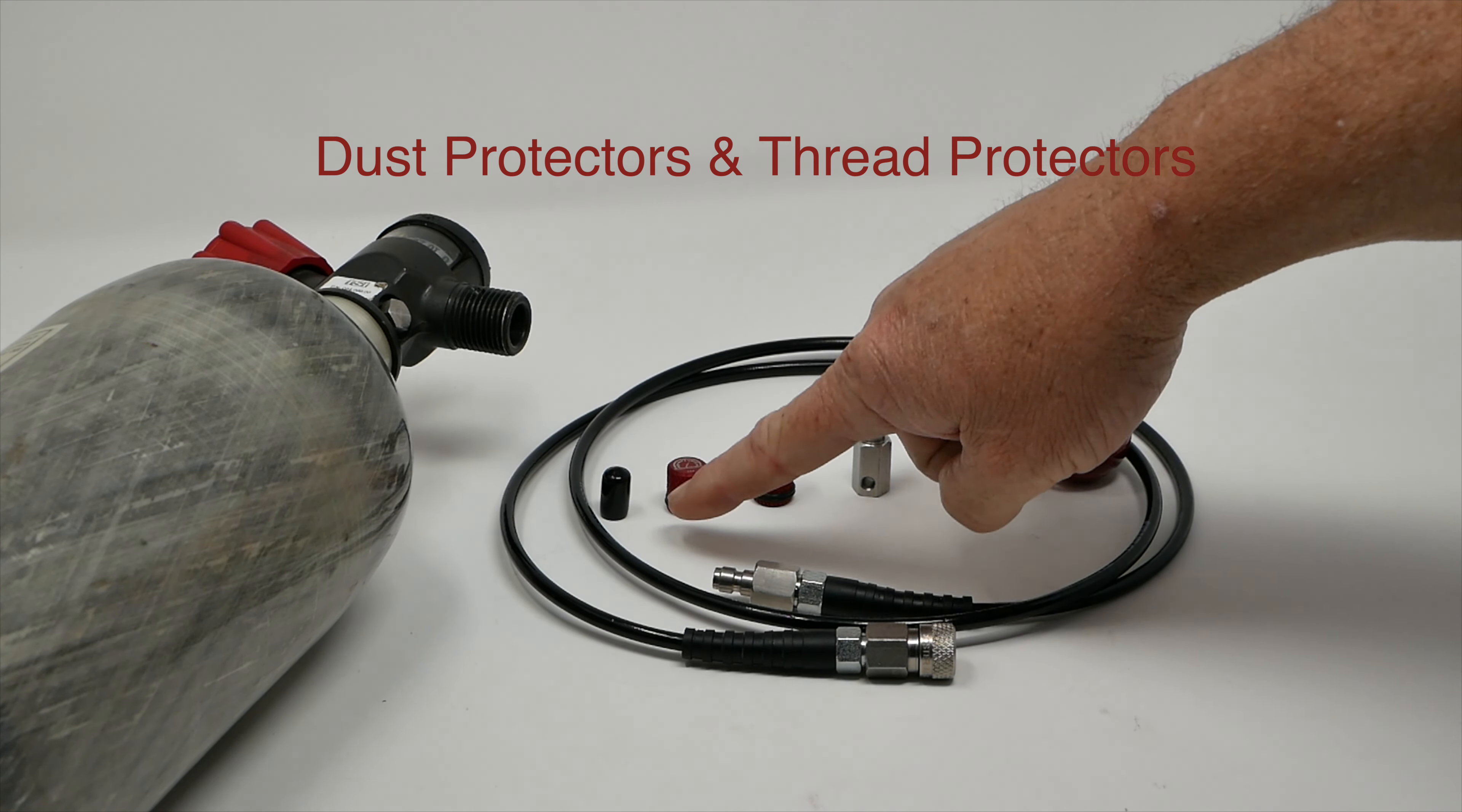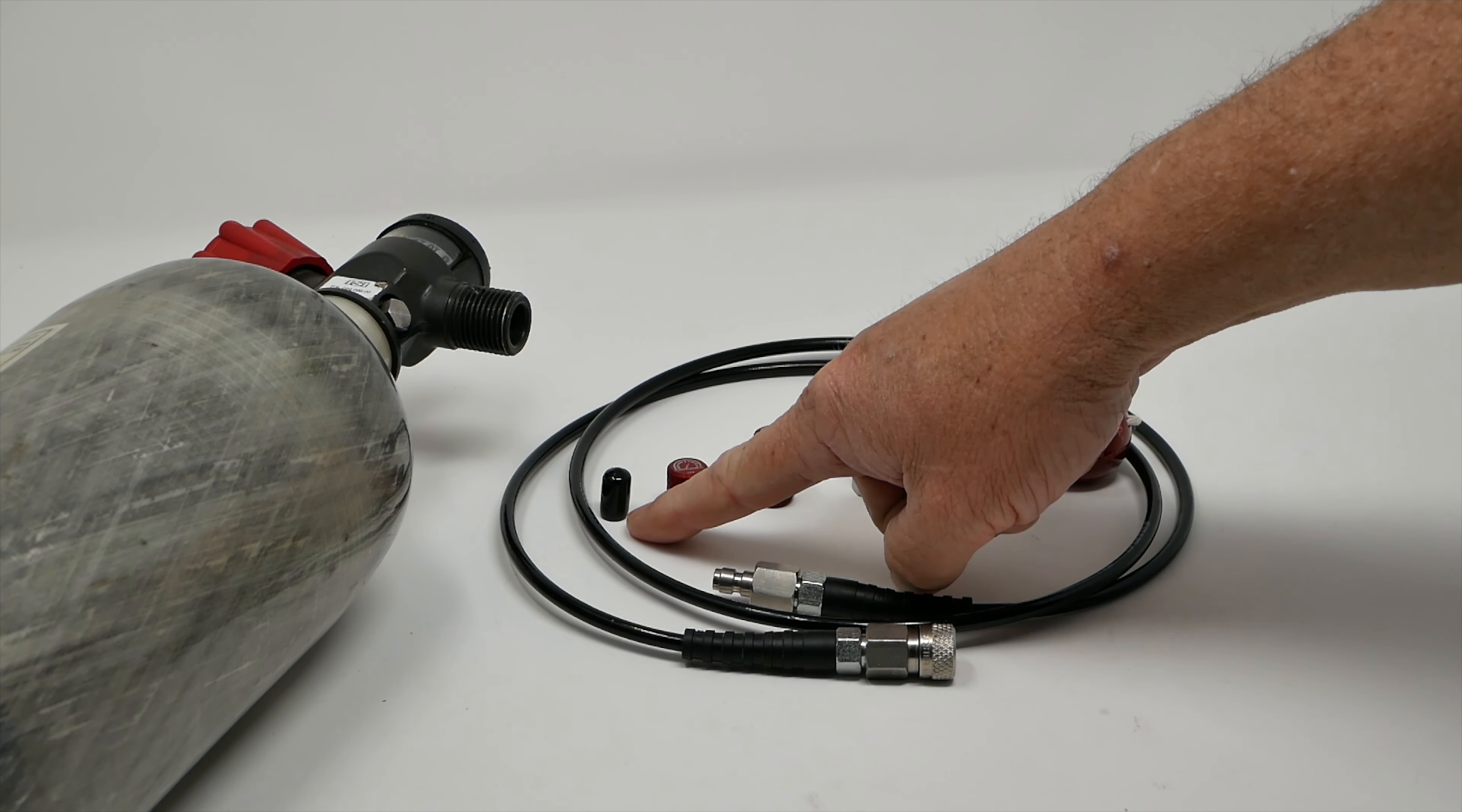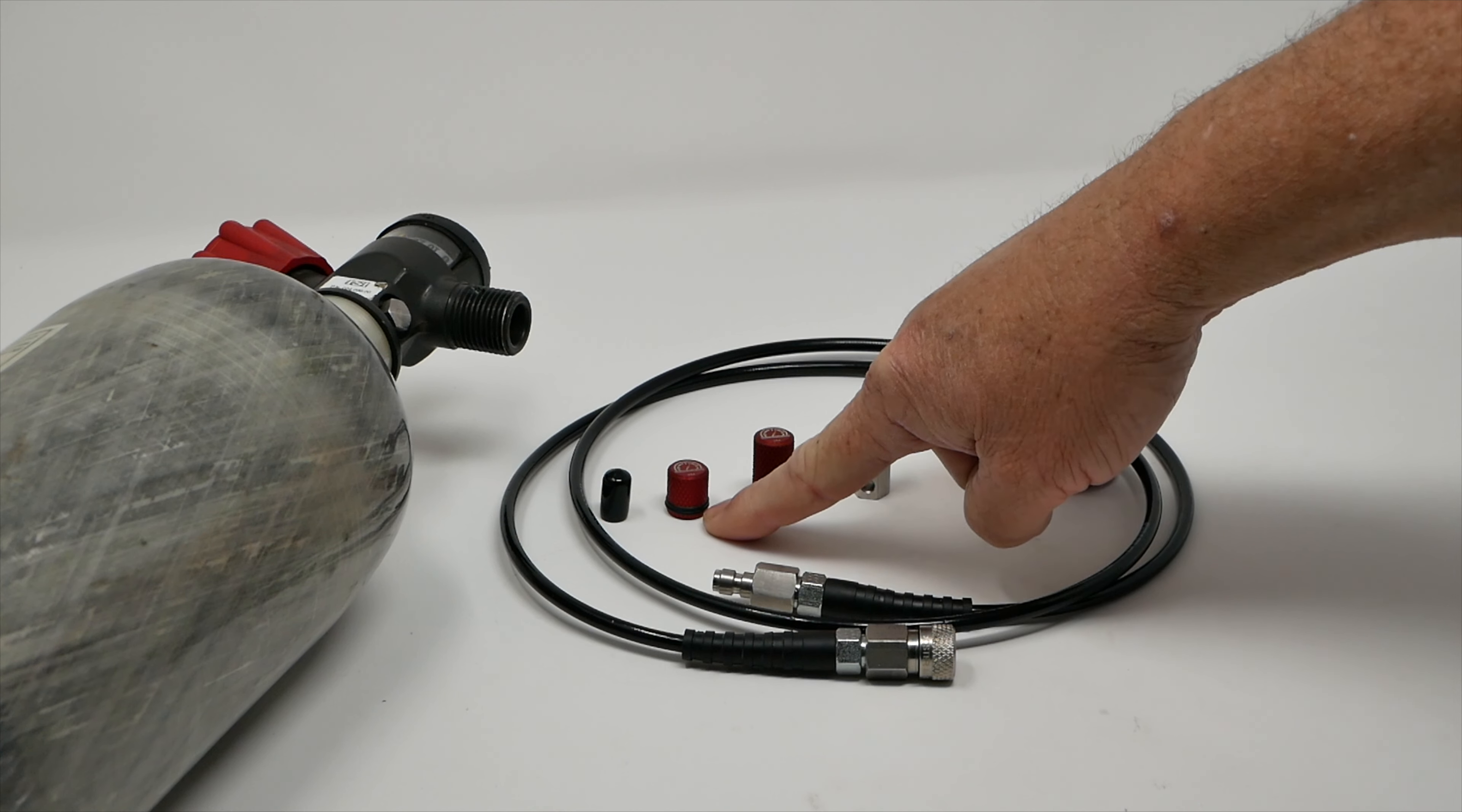So first thing over here we have a simple plastic slip-on cover for a male quick connect or male foster fitting. Then we have our Catman, our standard one that goes on your air gun and your fill nipple that helps keep the dust out and looks cool.